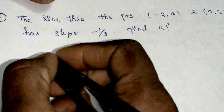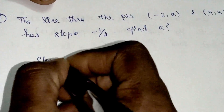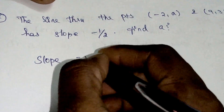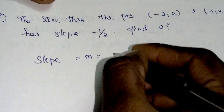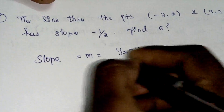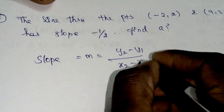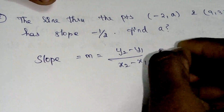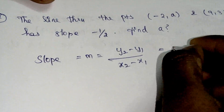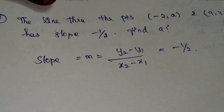Let's sum up. The slope formula: m is equal to y2 minus y1 divided by x2 minus x1. The slope value they have given is minus 1 by 2.